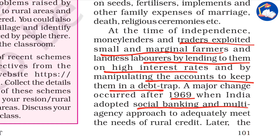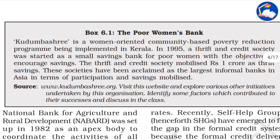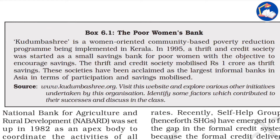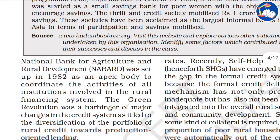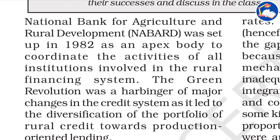Kudumbashree is a women-oriented community-based poverty reduction program implemented in Kerala in 1995. The thrift and credit society was started as a small savings bank for poor women, with the objective to encourage saving. The thrift and credit society mobilized one crore rupees as thrift savings. These societies have been acclaimed as the largest informal banks in Asia in terms of participation and savings mobilized. Kudumbashree organizes groups of women in a locality to make pickles and other agriculture products, generating income for women.